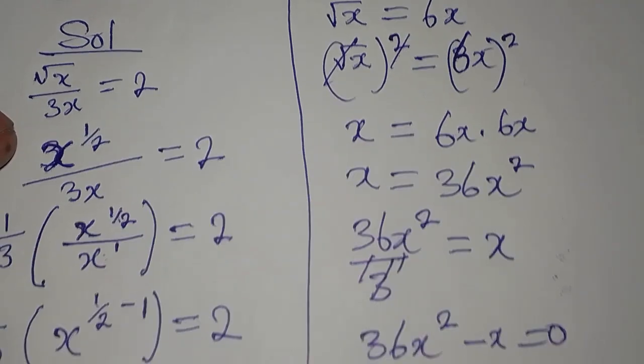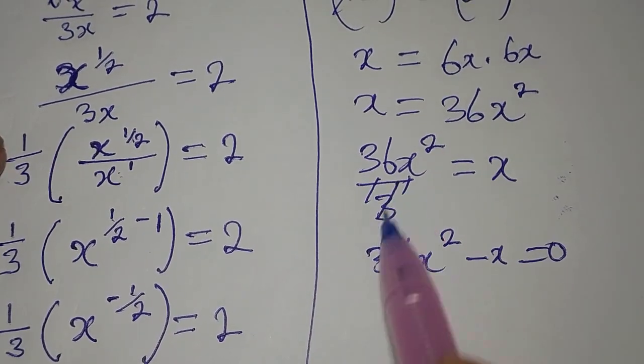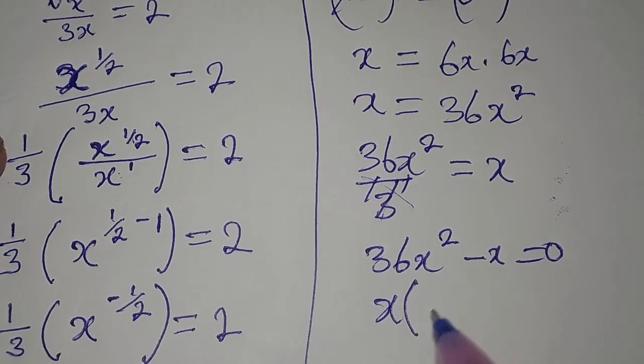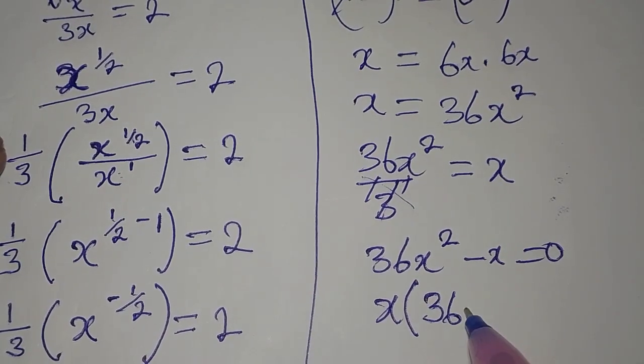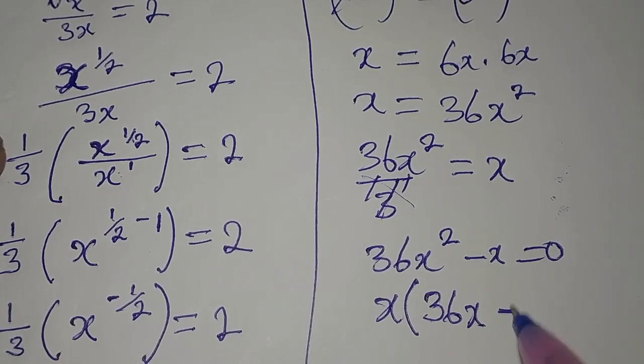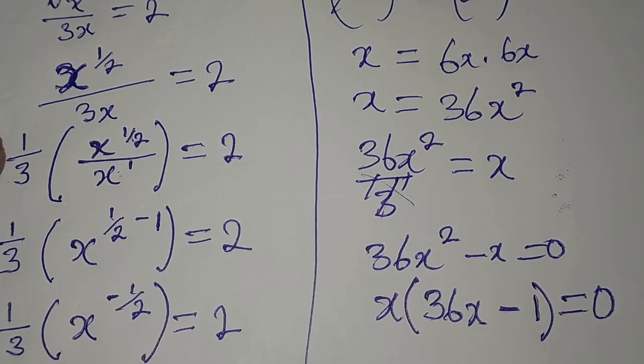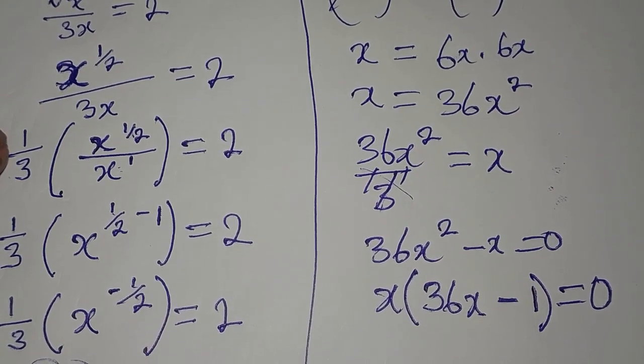Bring everything to the same side. So that we can now factorize x out. We have x times 36x minus 1, and everything here is equal to 0.